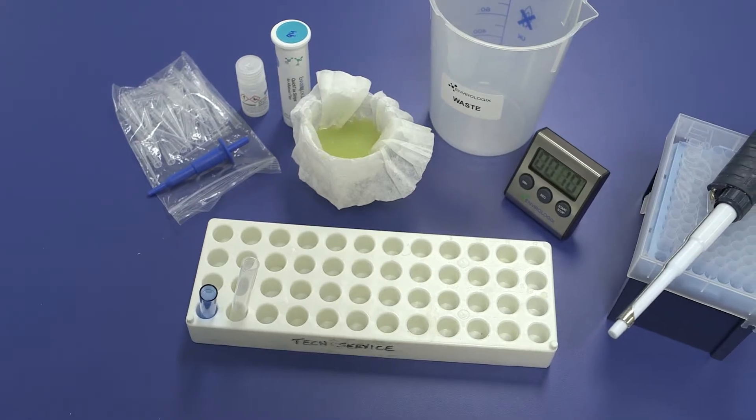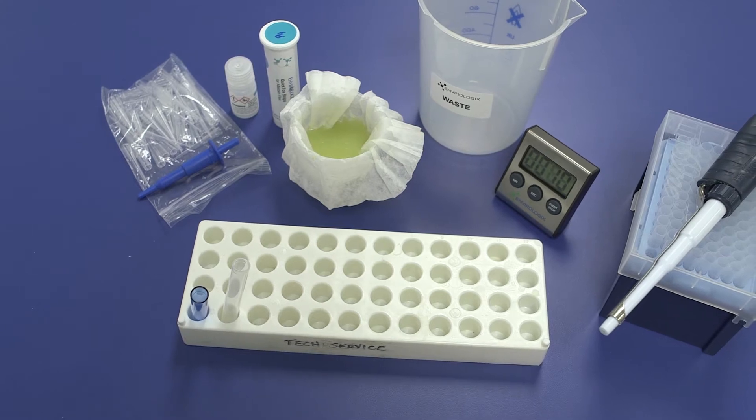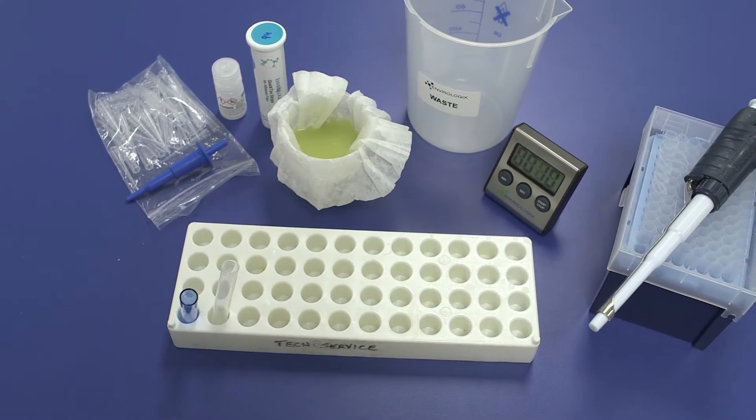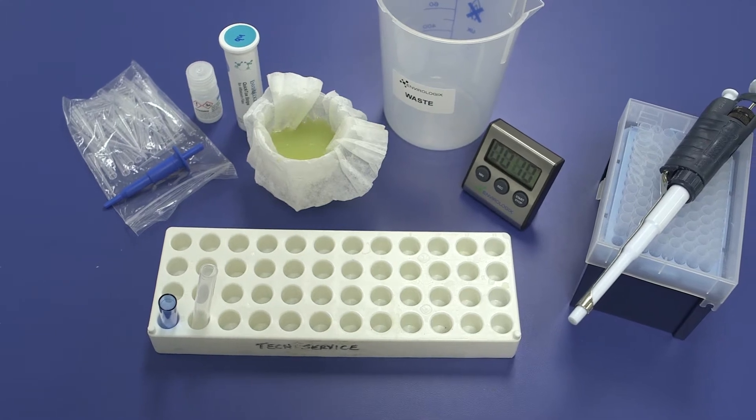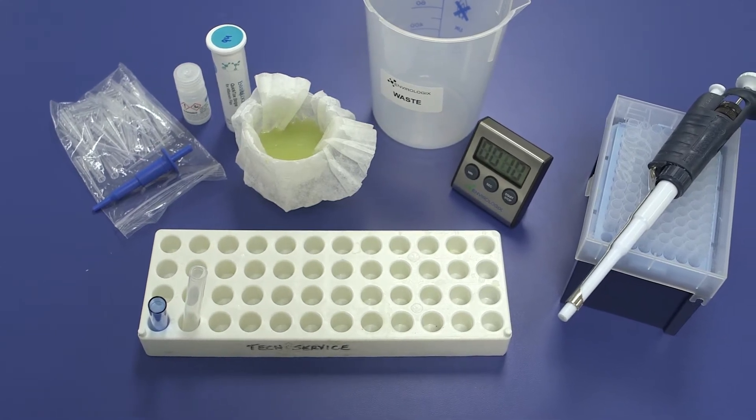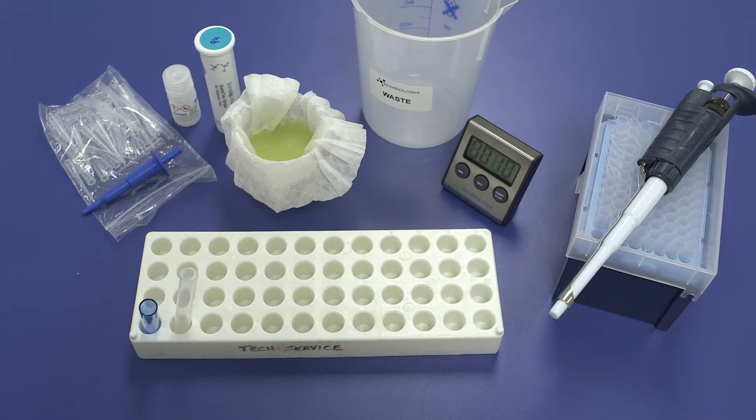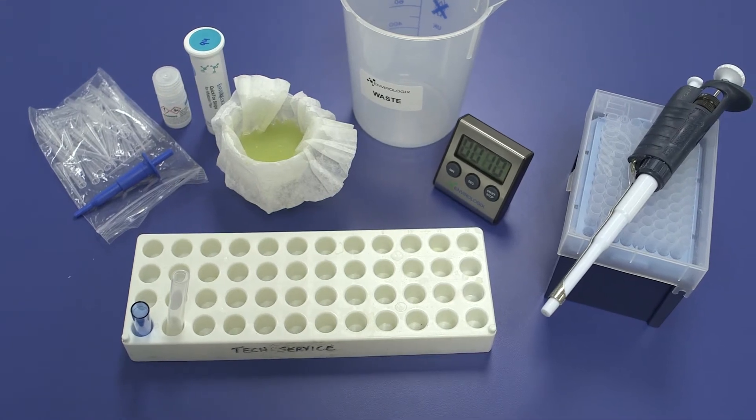Extra tubes and EB-17 pouches are needed when running dilutions. For optimal accuracy, we recommend using a 1-milliliter adjustable pipette for dilution preparation. See the available accessories section of the product insert for ordering information.